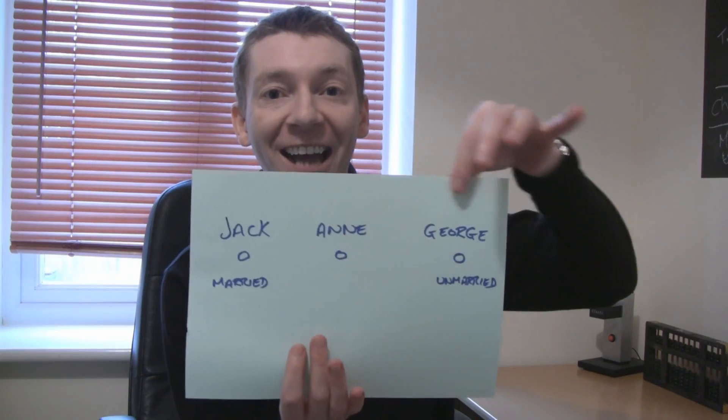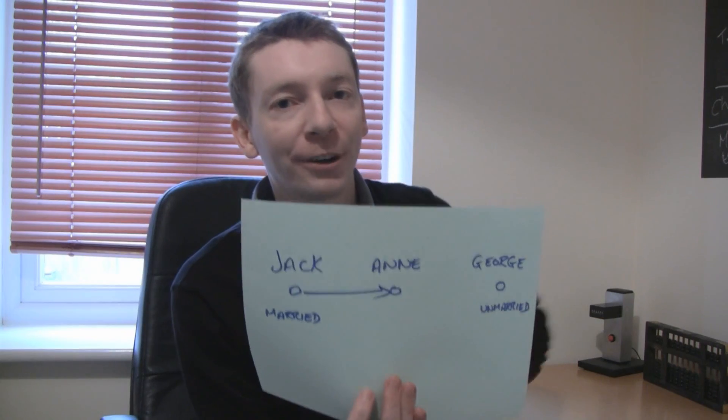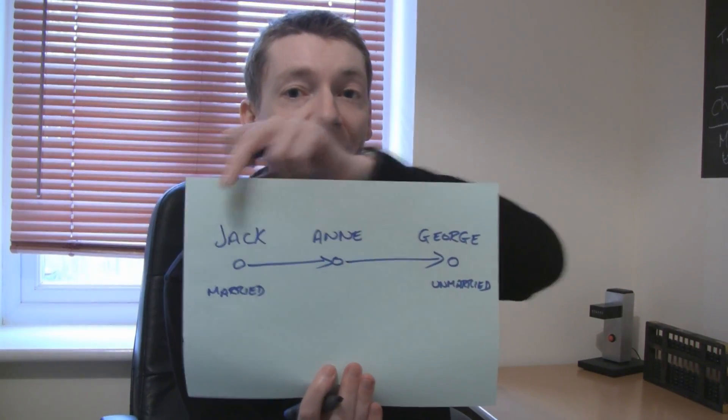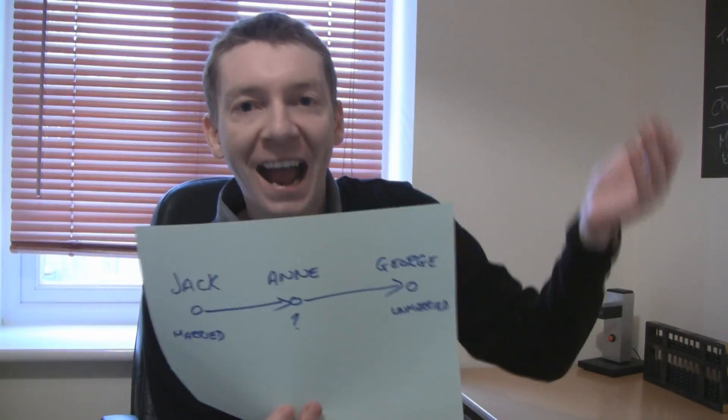I got this problem from a book called The Science of Genius by Scientific American, and in particular this problem was described in a chapter by Keith Stanovic. Now let's look at the setup for this problem. We've got three people: Jack, Anne, and George. Now we know that Jack was looking at Anne, which I'll represent by drawing in an arrow like that. We had Anne looking at George, which I'll draw in another arrow for that. Now Jack was married and George was unmarried, but we knew nothing about the marital status of Anne.